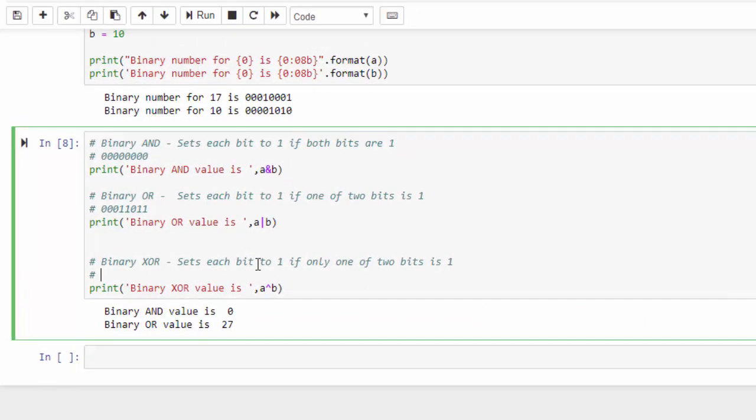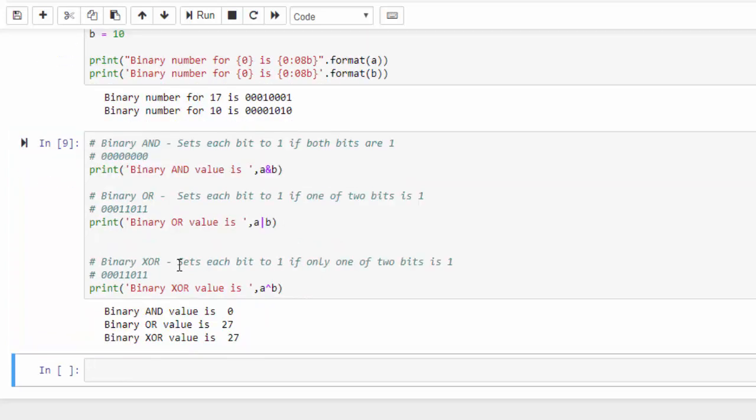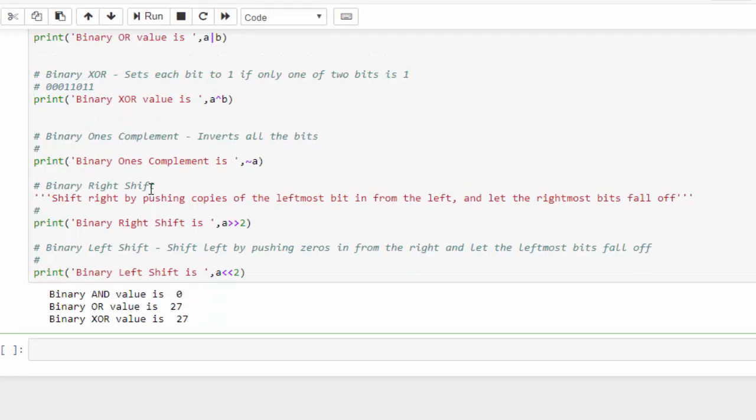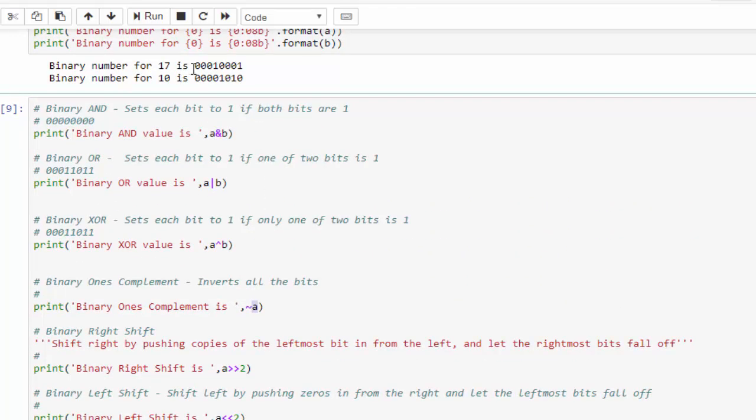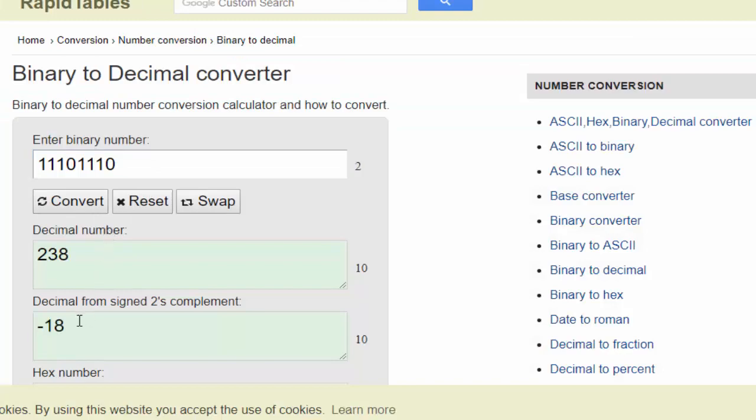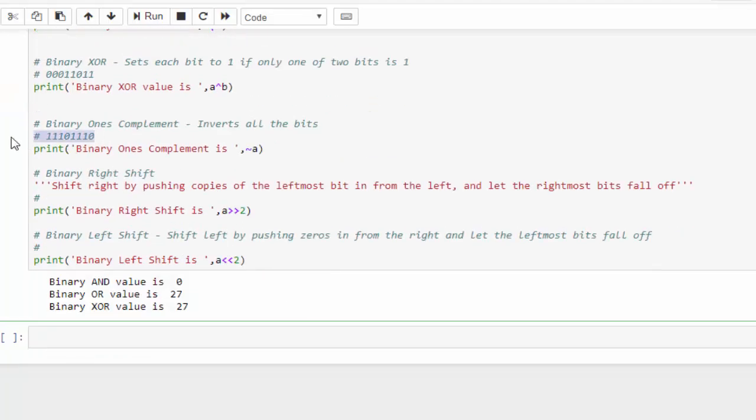Third one is binary XOR, which sets the bit to 1 if any one of 2 bits is 1. So 0 0 0 1 1 0 1 1, once again the output will be 27. The next one is binary one's complement. We can mention the symbol like this, tilde variable. The a means it is 17. First this will convert to binary number 00010001, then this will invert 0 to 1, 1 to 0, like that. In this case it will be 11101110. If you want what is the output for this, it is minus 18. If you run, you should get minus 18.